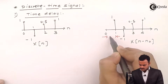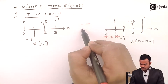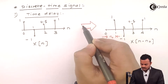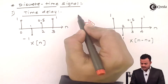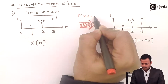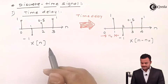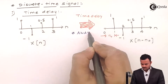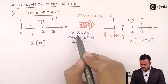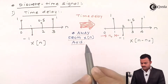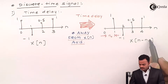What happened here is the signal moved away from the vertical axis, so time delay has taken place. We can observe the signal is moving away from the vertical axis, which is exactly the same thing we discussed for the continuous time signal. Keeping this in mind, delay means a minus shift.